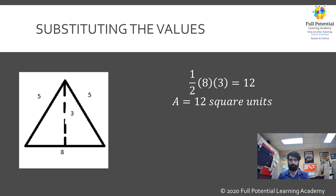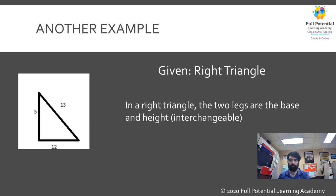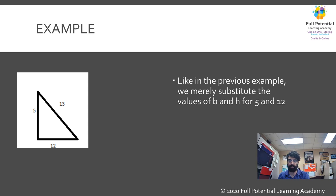Let's consider another example. The image is a right triangle. When calculating the area for a right triangle, the base and height are simply the legs of the triangle. In this drawing, we can consider the height to be 5 and the base to be 12. Keep in mind that these values are interchangeable.